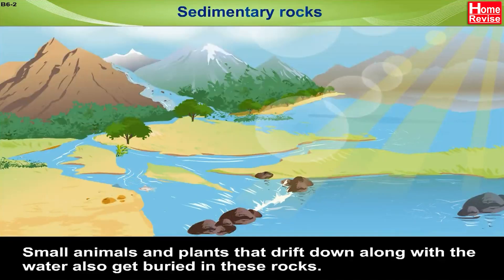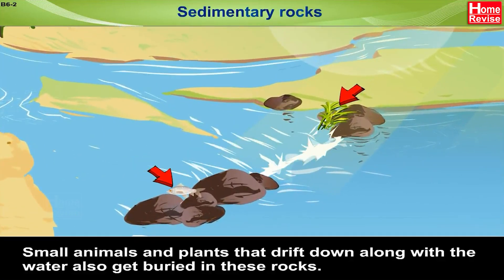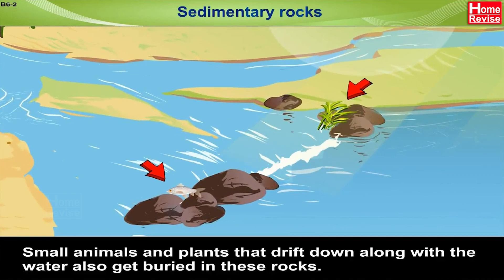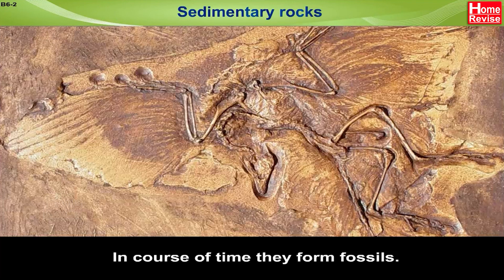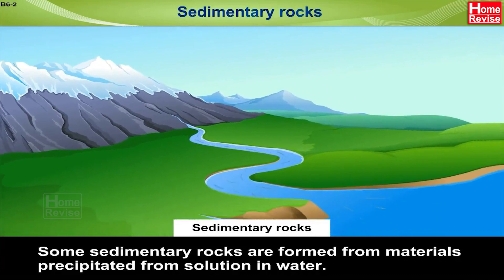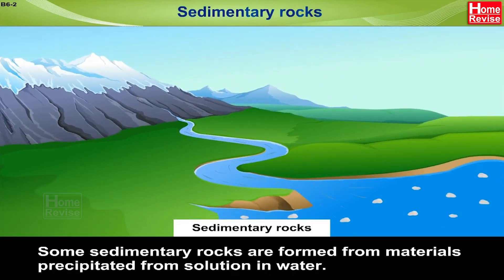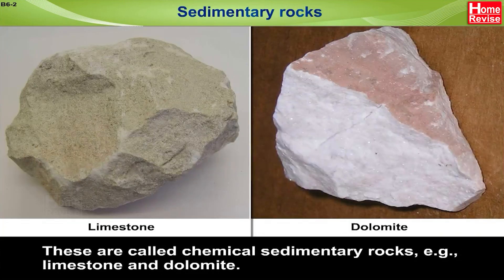Small animals and plants that drift down along with the water also get buried in these rocks. In course of time, they form fossils. Some sedimentary rocks are formed from materials precipitated from solution in water. These are called chemical sedimentary rocks. Examples: limestone and dolomite.